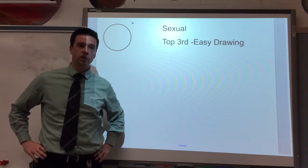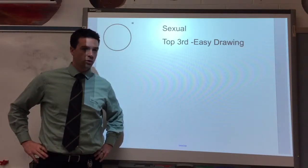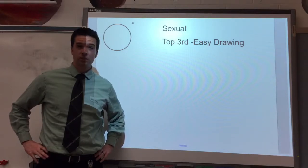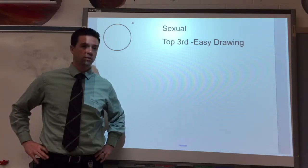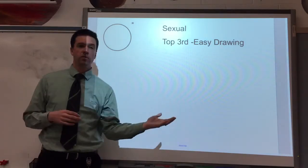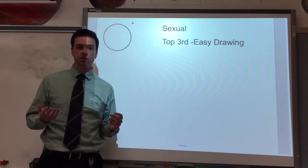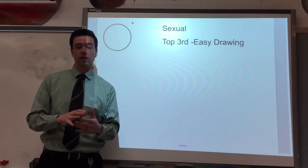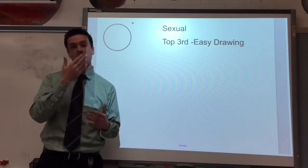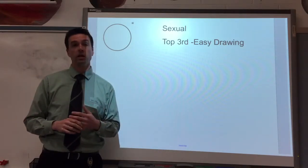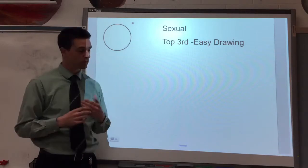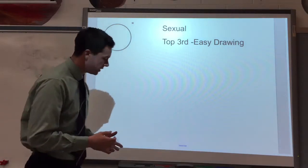Sexual reproduction — let's get into this. Most organisms do it; plants do it too. Sexual reproduction essentially means you have an egg and a sperm: an egg from a female, sperm from a male, and they come together. It can be animals, plants, a variety of different species — as long as you have sperm and egg, it's sexual reproduction.